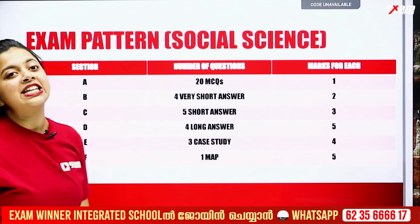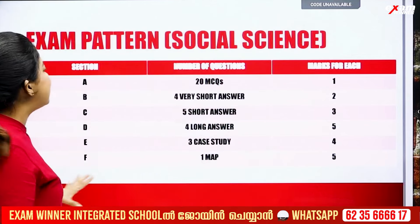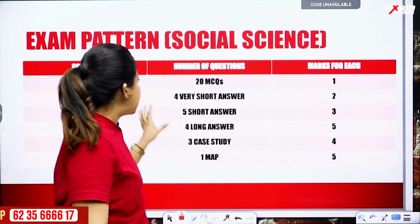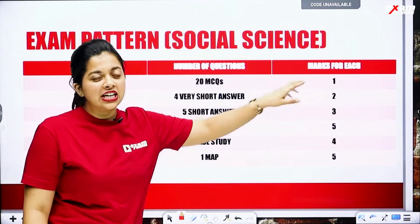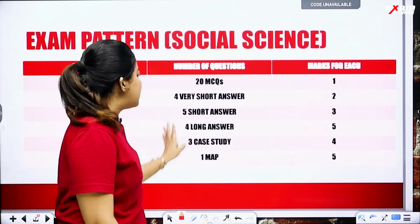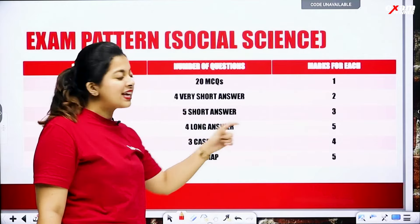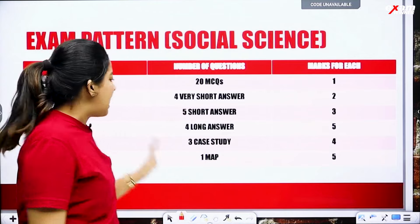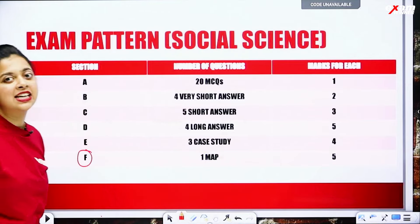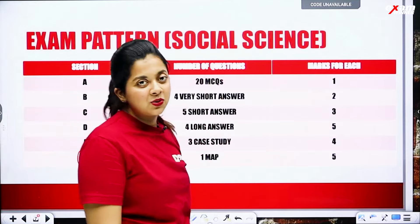We have Social Science. Social Science has 5 sections. We have 20 MCQs, each carrying 1 mark. Then 4 very short answers, each carrying 2 marks. Then 5 short answers, each carrying 3 marks. Long answers are 4, each carrying 5 marks. Then 3 case studies, each carrying 4 marks. And last, one additional component for Social Science — we have a map, that is 5 marks.